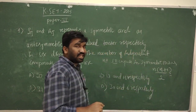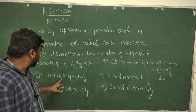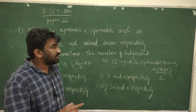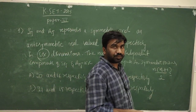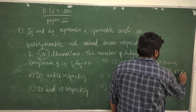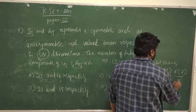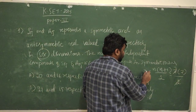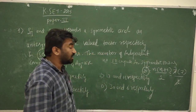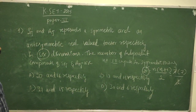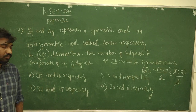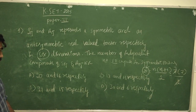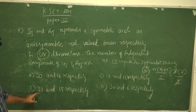Here the dimension is 6, so the number of independent components for Sij is 6 × (6+1)/2 = 6 × 7/2 = 21. There are 21 independent components for the symmetric tensor Sij.